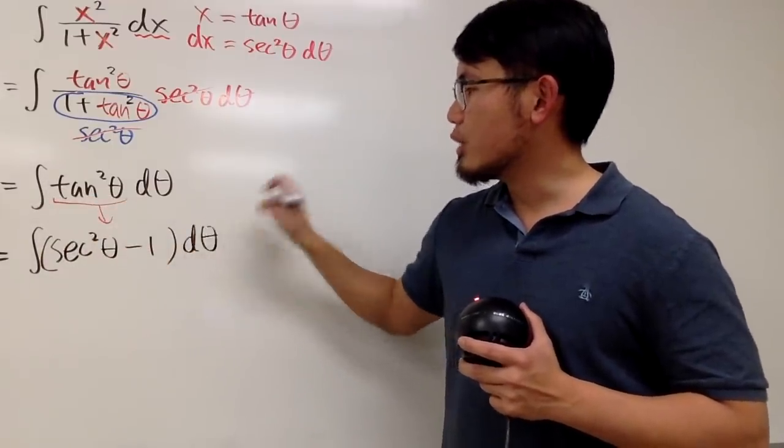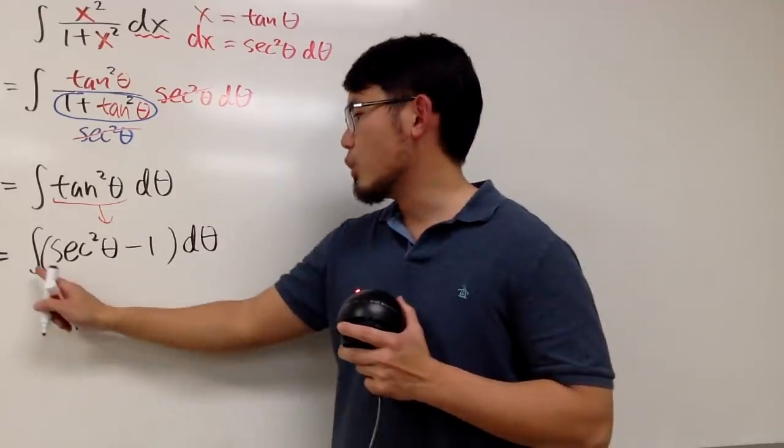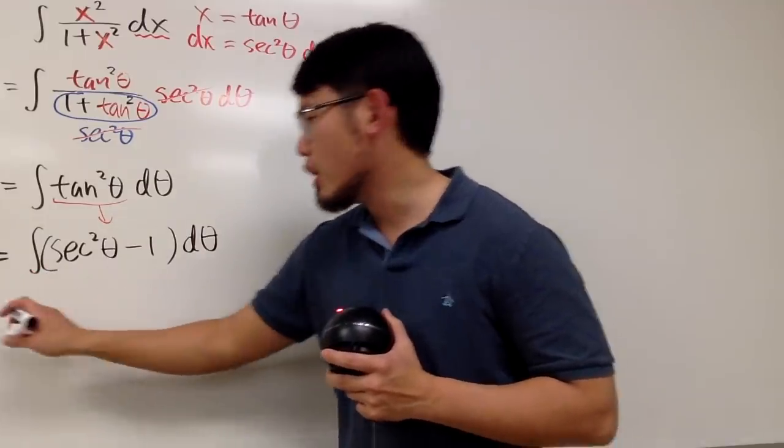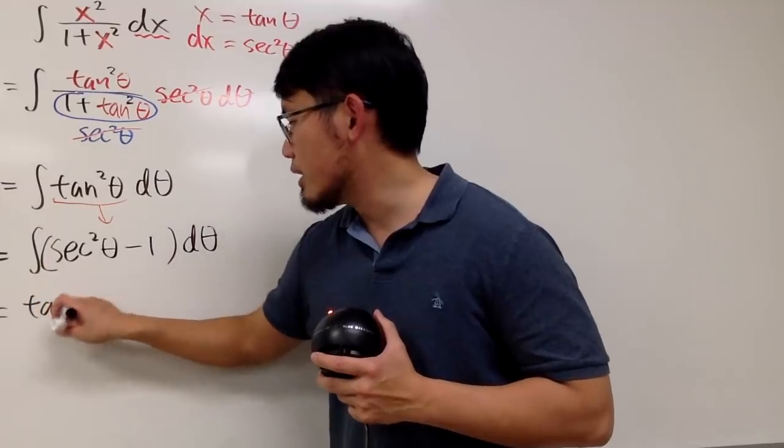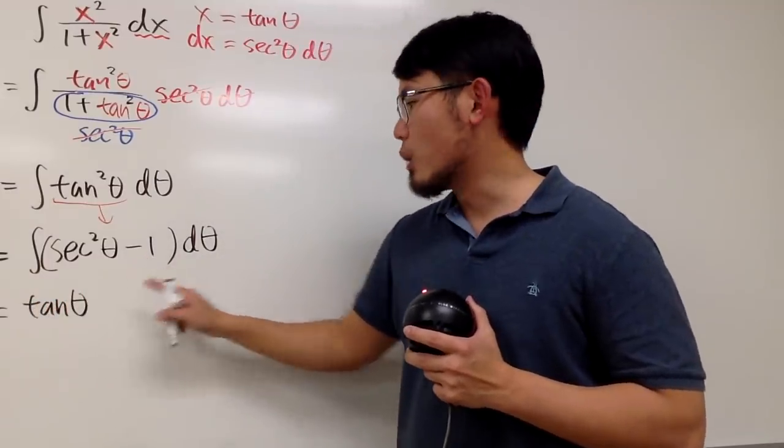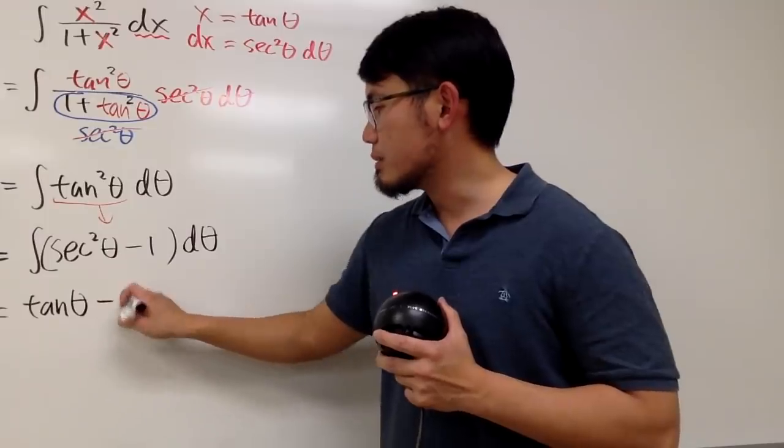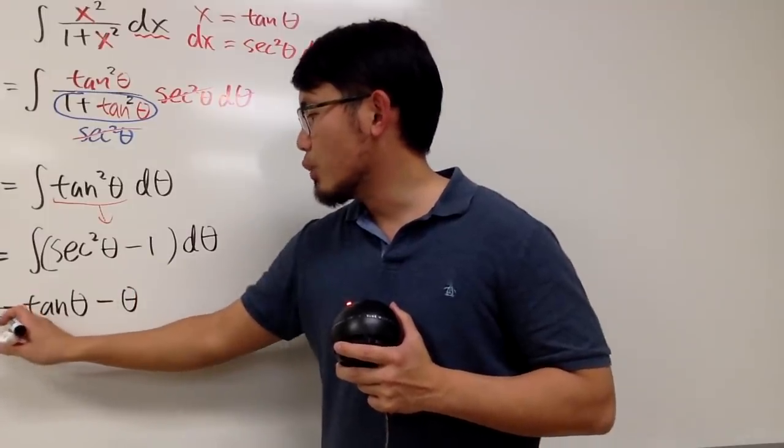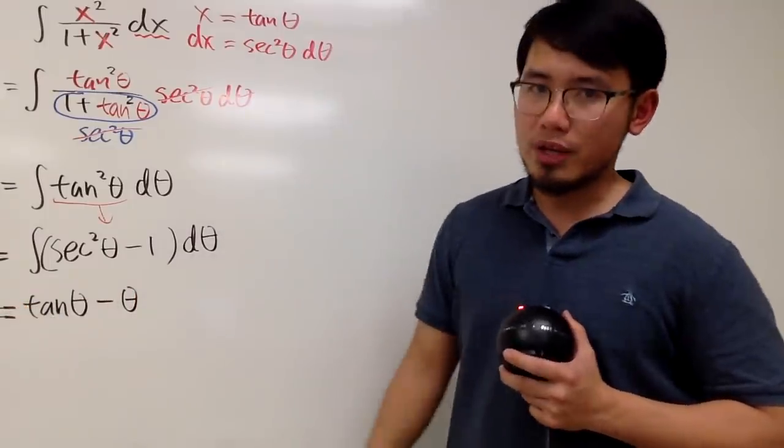And the reason I want to do that is because when we integrate secant squared theta, we know that's just regular tangent theta. And then when we integrate minus 1 in the theta world, that's just minus theta. So we finished the integration step already.